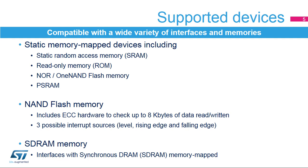The FMC controller supports a wide variety of devices and memories. It interfaces with static memory mapped devices including SRAM, ROM, NOR or NAND flash memory, and PSRAM. The FMC also interfaces with NAND flash memories and supports error code correction (ECC) for up to 8 bytes of data read or written. Three interrupt sources can be configured to generate an interrupt when a rising edge, falling edge, or high level is detected on the NAND flash ready-busy signal.